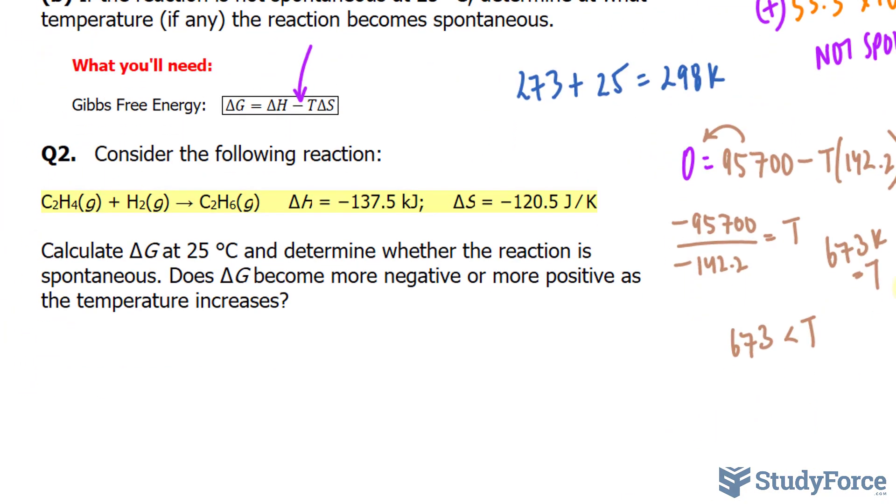In question two, we're asked, consider the following reaction. Calculate delta G at 25 degrees and determine whether the reaction is spontaneous. And does delta G become more negative or more positive as the temperature increases? So let's do this really quickly. Notice that this is in kilojoules again.